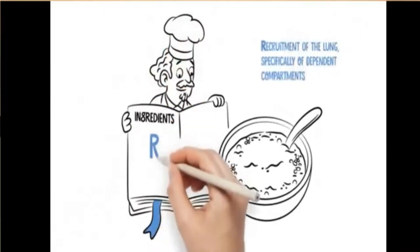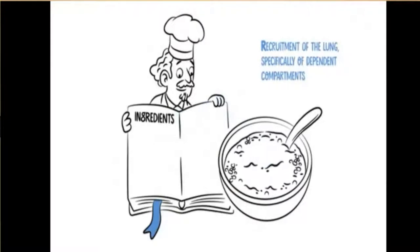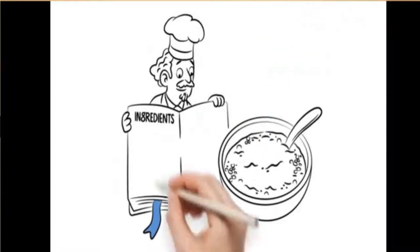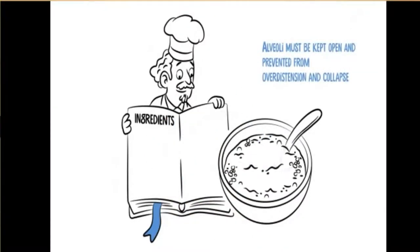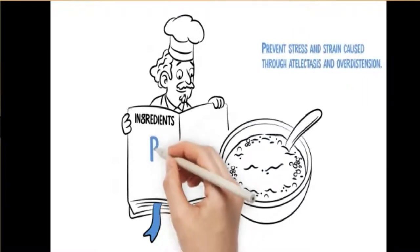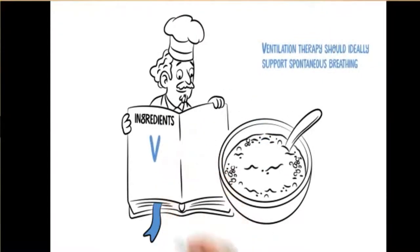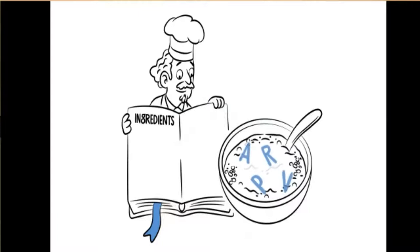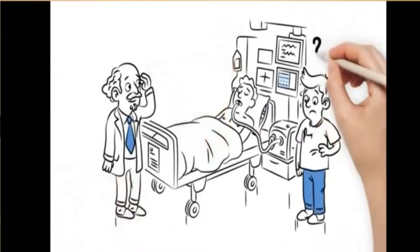That recipe is recruitment of the lung, specifically of dependent compartments. While recruitment is affected by time and pressure, the elevated mean airway pressure contributes to the recruitment of slow recruitable compartments of the lung. Alveoli must be kept open and prevented from over-distention and collapse. It is important to prevent stress and strain caused by atelectasis and over-distention, which means carefully ventilating the healthy compartments of the lung while preventing alveolar collapse. Ventilation therapy should ideally support spontaneous breathing.